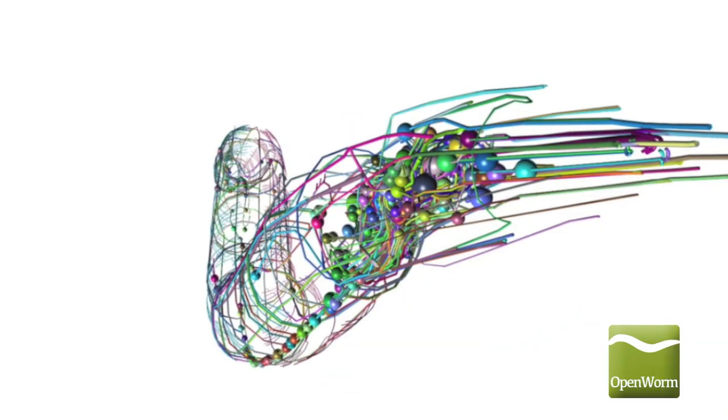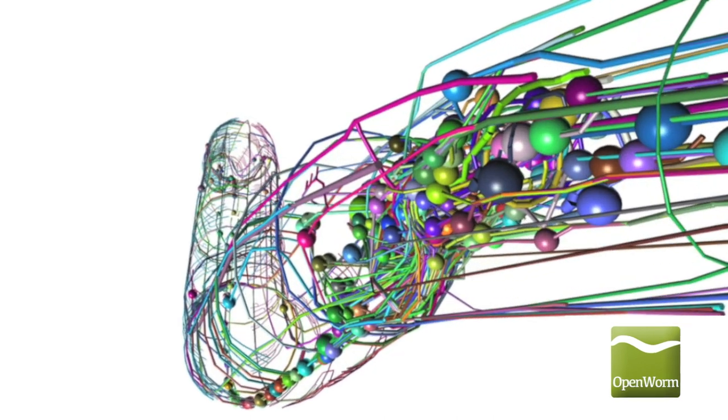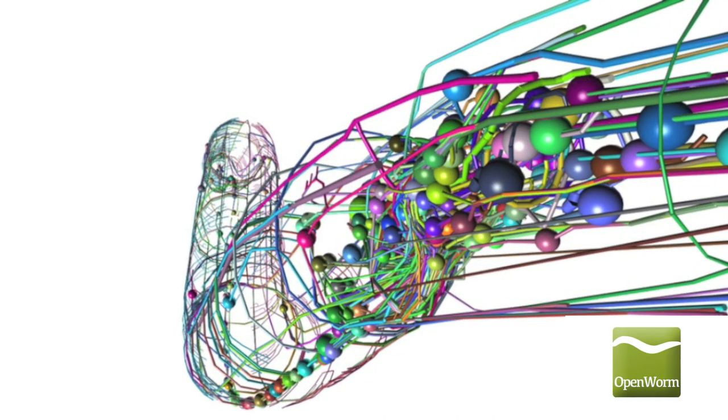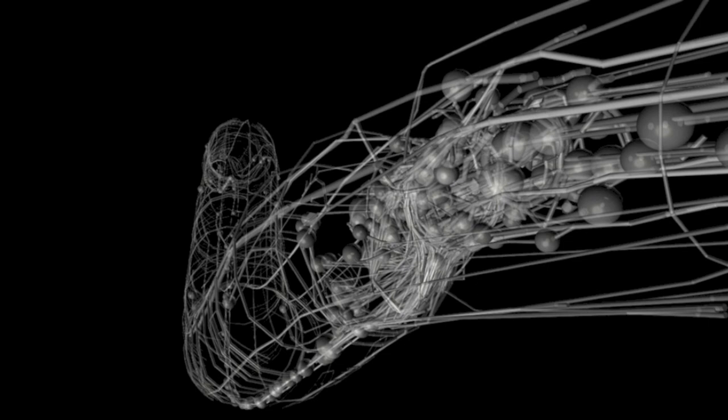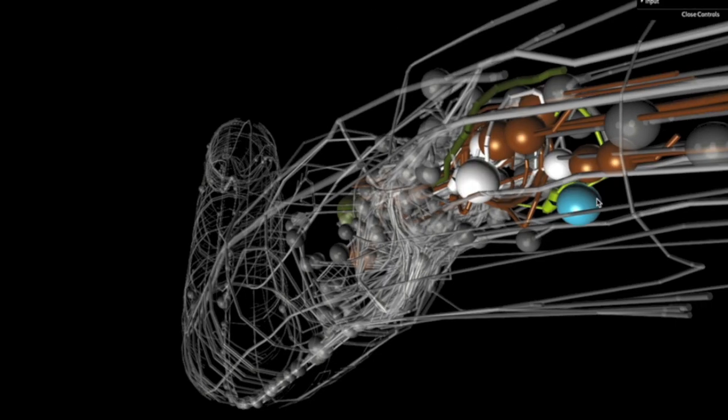However, as a result of its simplicity, transparent nature, and well-characterized cell lineages, the entire pattern of neuron connections, or connectome, of C. elegans has been mapped.